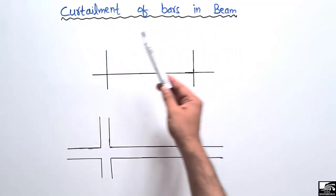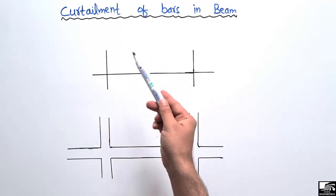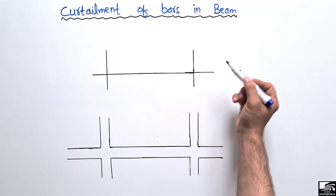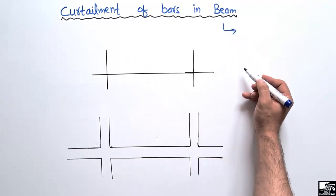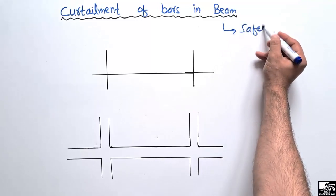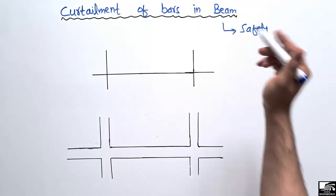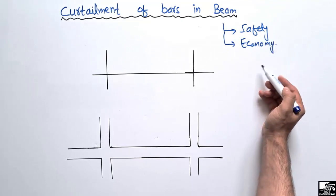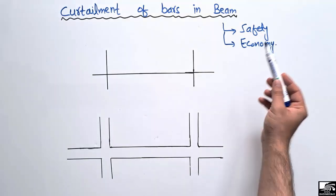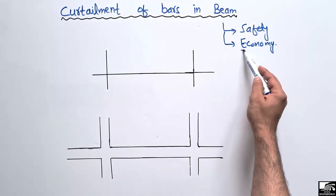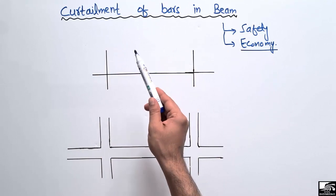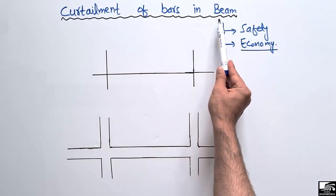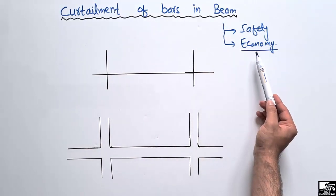Why we do the curtailment of bars and why we need this curtailment of bars — we will discuss this topic in today's lecture. Basically, there are two main things in civil engineering structures: the first is safety, that our structure must be safe, and the second is economy, that our structure should also be economical and not too expensive. So for economy, we do curtailment of bars in beams.